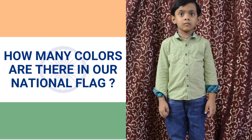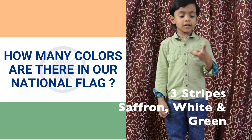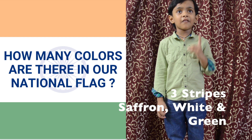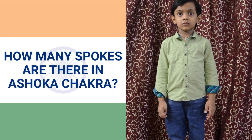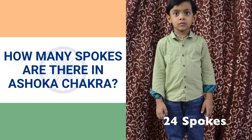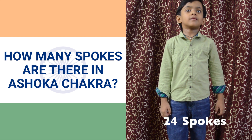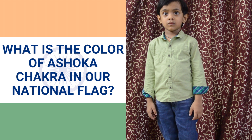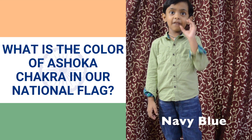How many colors are there in our national flag? Three colors: saffron, white and green. How many spokes are there in Ashoka Chakra? Telephone spokes. What is the color of Ashoka Chakra in our national flag? Neville blue.